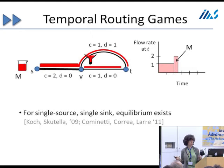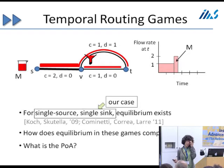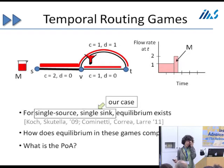In this model, equilibrium exists. This is due to work of two groups: Koch and Scitella, and Cominetti, Corea, and Lahr — both fairly recent work. This is for the single-source, single-sink case, which is the case we're analyzing. It also happens to be unique, as shown in the second paper. What we're interested in is how the equilibria compare with the optimal, and what's the price of anarchy in this model.